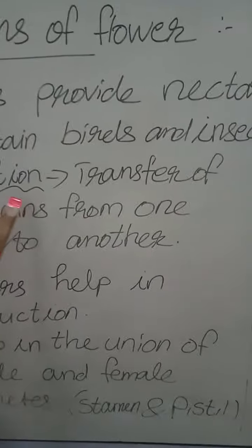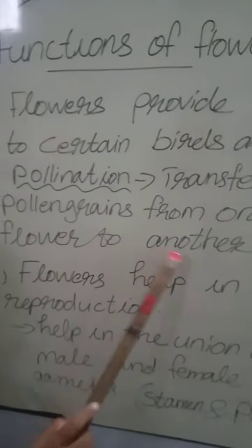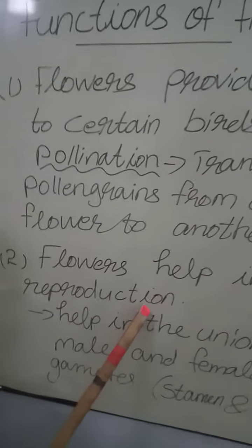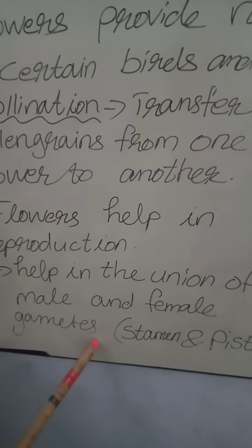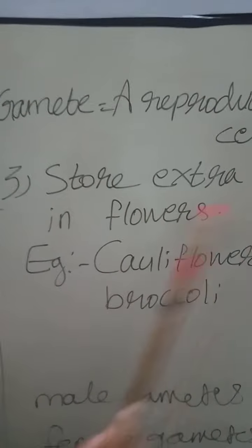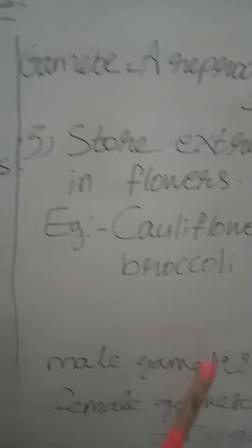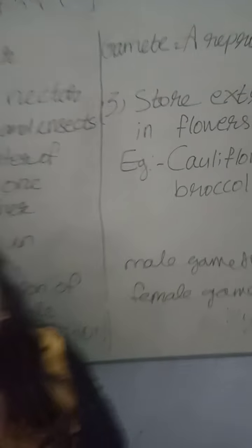So the first function of a flower is that flowers provide nectar to certain birds and insects. Then pollination means transfer of pollen grains from one flower to another. Then the second function is flowers help in reproduction, that means the union of male and female gametes. Then the third function — some plants store extra food in the flowers, for example cauliflower and broccoli. So these are the three main functions of a flower.